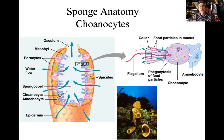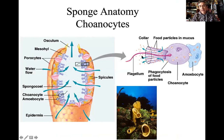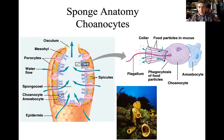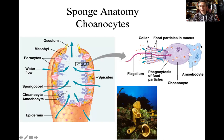The sponge is a collection of little cells we call collar cells, or choanocytes. A choanocyte is basically a cell with a trap — a little net mechanism, a collar. We have a cell with a long flagella; the flagella waves back and forth, generating water movement. Little food particles in the water get trapped in the net, in the collar, and are moved to the actual cell, which then digests and feeds upon whatever's caught there. We also have another cell called the amoebocyte. These two cells work in collaboration to capture and completely digest prey.